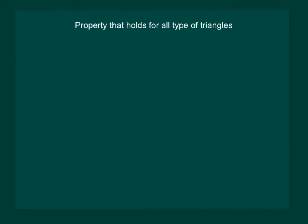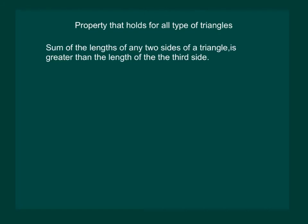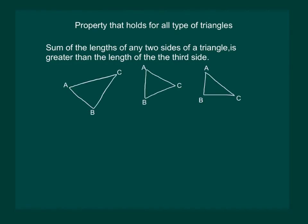Let us state another property that holds for all types of triangles. This property states that the sum of the lengths of any two sides of a triangle is greater than the length of the third side. That means the sum of any two sides is greater than the third side, BC.